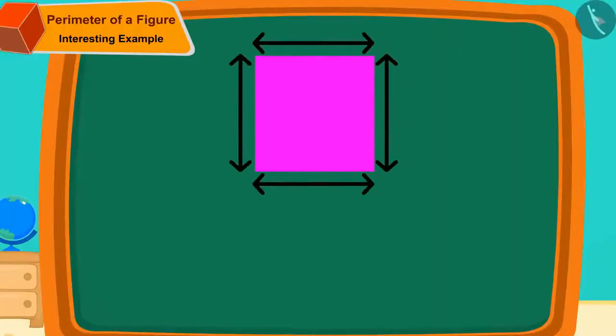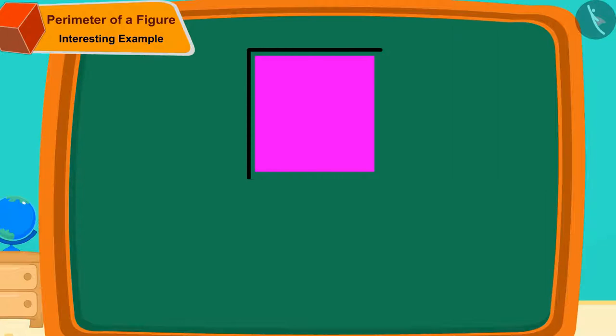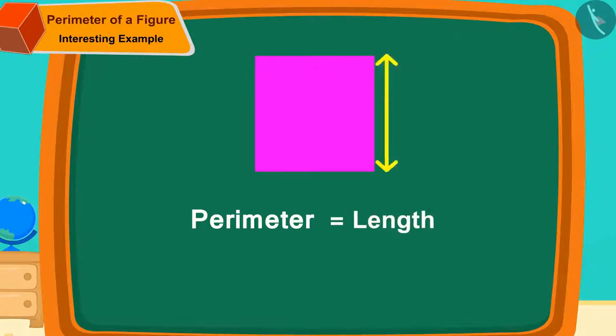All sides of the square are of the same length. So, to find the perimeter of a square shape, we can simply multiply the length of any one of its edges by 4.